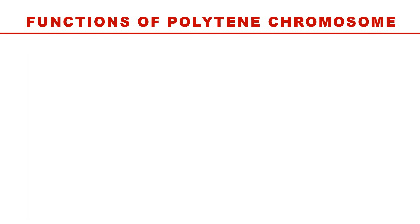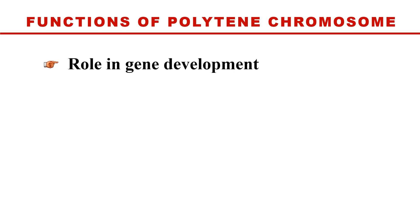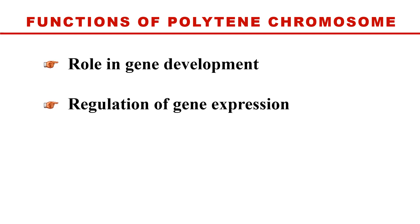The functions of polytene chromosomes include gene development and regulation of gene expression. These chromosomes undergo endoreplication, which leads to the development of specific gene sequences, allowing for increased protein production to meet the high metabolic demand of certain cells. The banding pattern on polytene chromosomes is associated with specific genes that help in the regulation of gene expression, and the puffs represent highly active transcription regions.